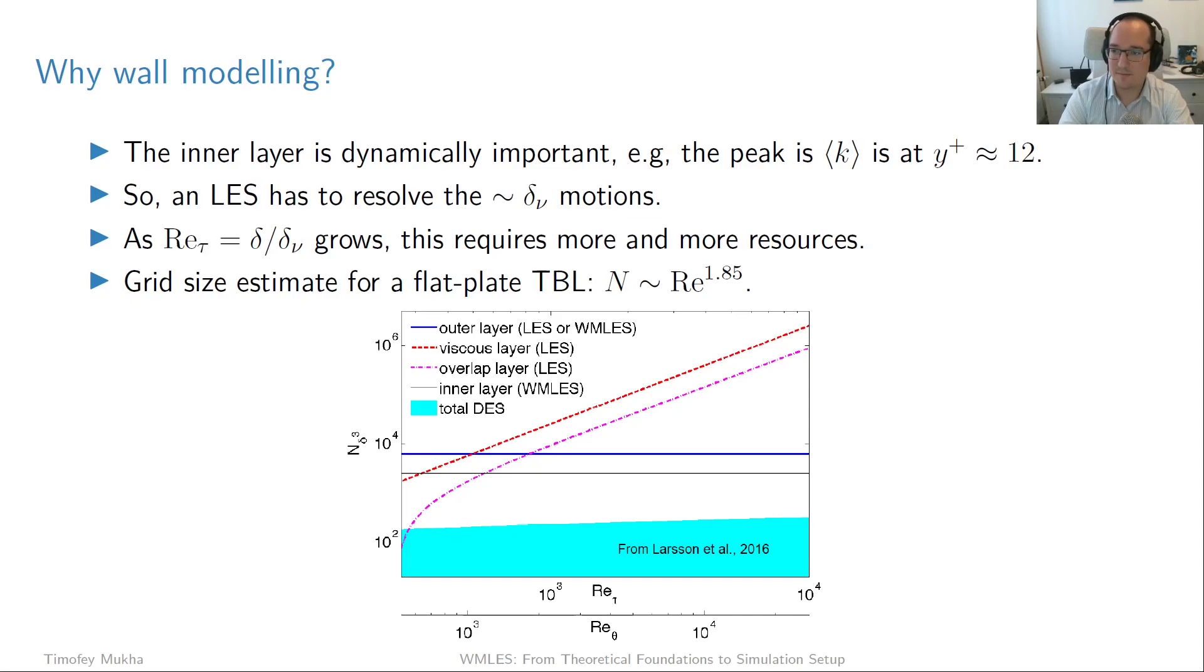Having reviewed the theory of TBLs, let us now ask perhaps the most important question of the video: Why do we even need wall modeling? Why can't we simply do conventional LES all the way down to the wall? So the problem is that this inner layer which we've seen is very, very thin, is nevertheless very dynamically important. In particular, if you look at such a quantity as the mean turbulent kinetic energy k, then we'll see that we have a peak in the inner layer, in particular at y_plus equal to 12, so very close to the wall. So for turbulent boundary layers, LES really becomes a misnomer because the eddies we need to resolve are not really large anymore, but rather they are on the scale of delta_nu, which is very, very small.